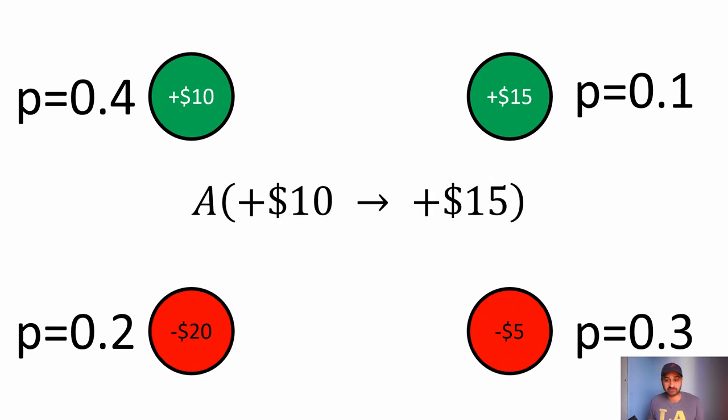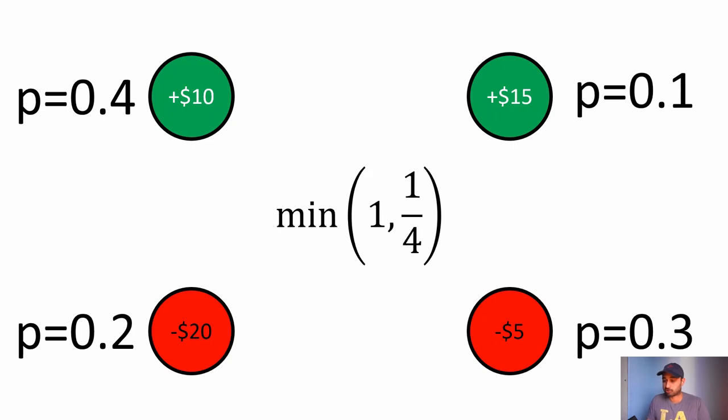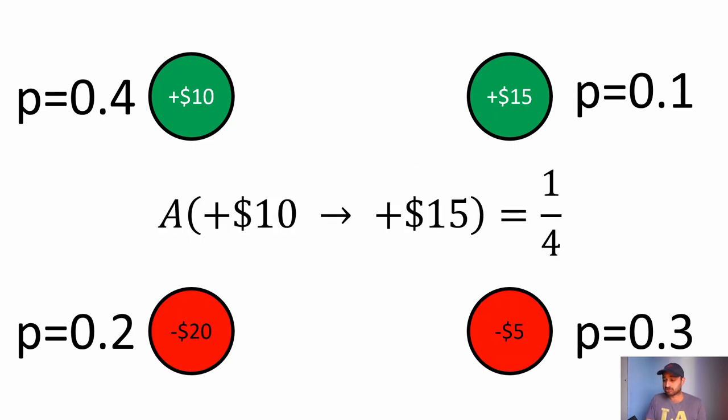Now we just do what we did in the Metropolis video, which is now we need to calculate an acceptance probability. An acceptance probability simply explained is that let's say you were at state plus $10 the top left and you got proposed state plus $15. What is the probability that you accept that proposal? Either you accept it with this probability at which point you do move over there, or you do not accept it with that probability and therefore you stay at the current state which is plus $10. The big result in that video was that this is going to be the minimum of one and the ratio of the long-term probabilities of those states. So the long-term probabilities of those states, the numerator here would be 0.1 and the denominator would be 0.4, so we're taking the minimum of one and one-fourth, which of course is equal to one-fourth.